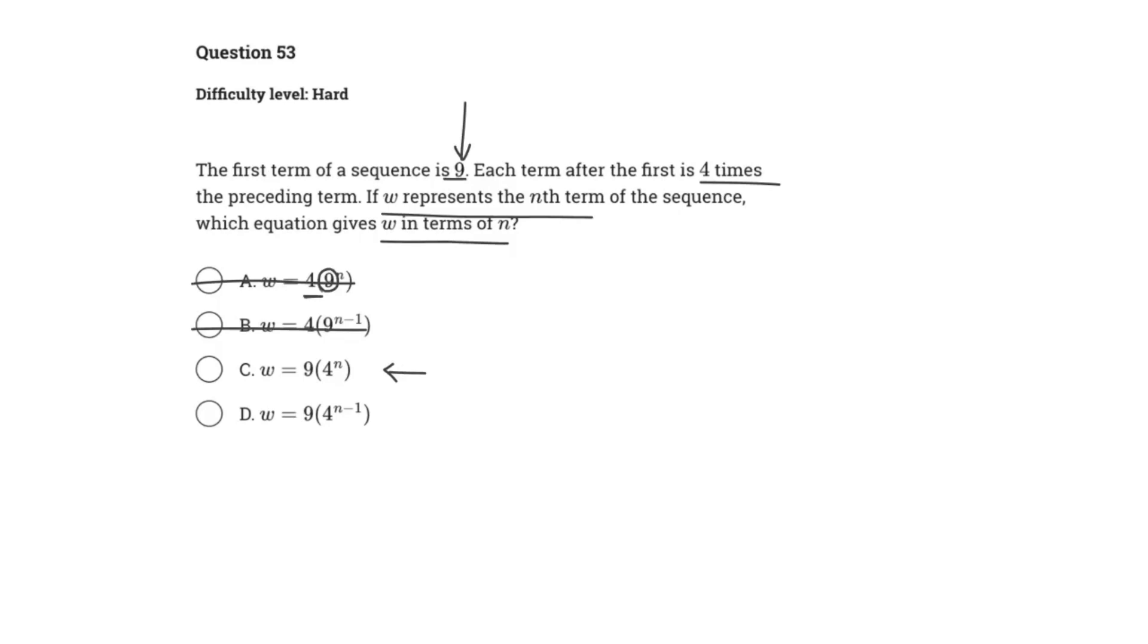So is it either C or is it D? Well, this is key information. It says if W represents the nth term, so W represents the nth term, and we know the first term right now is 9. So if we know the first term is 9, that means if we plug in 1 for n, we should get a value of 9.